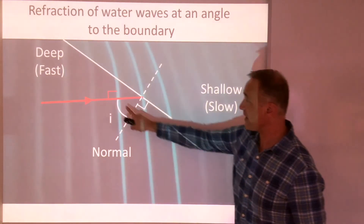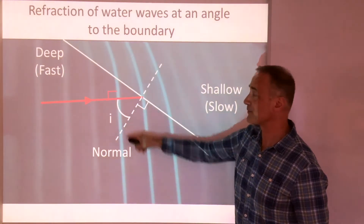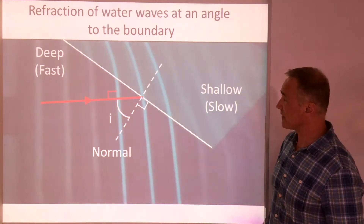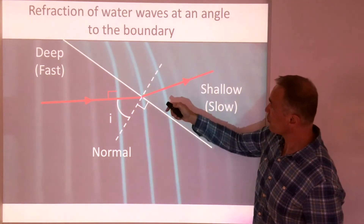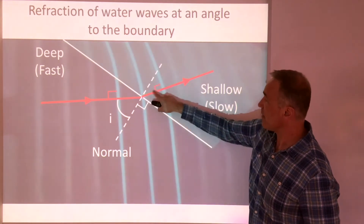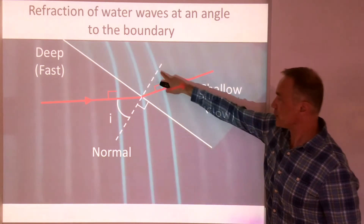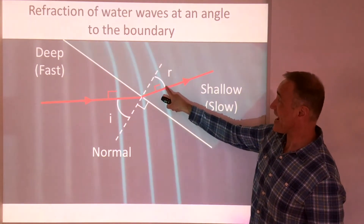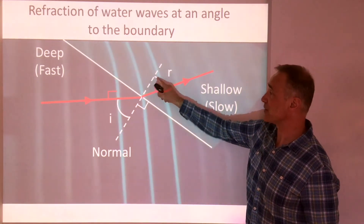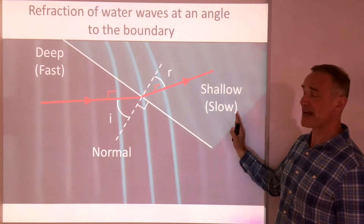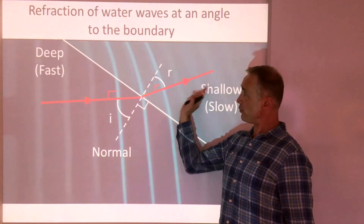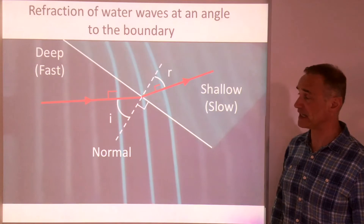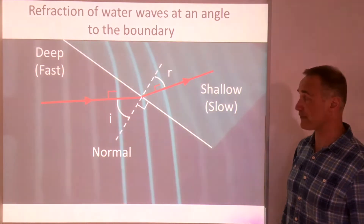That gives us the angle of incidence. By drawing another ray at right angles to the wave front inside the shallow water, we get the angle of refraction. The wave slows down, so the rays — the direction — bend towards the normal. This clearly proves refraction.